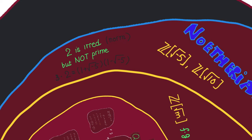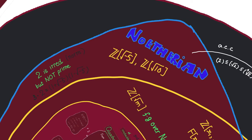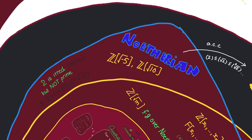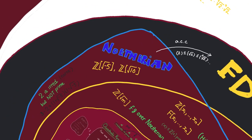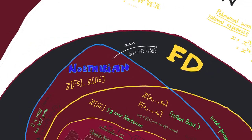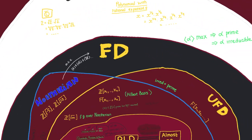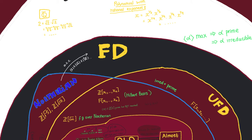Let's look at ℤ adjoined square root of -5. We have two different factorizations of 6 into irreducibles. We can check that these factors are irreducible by computing the norm. Thus, even when we have factorization into irreducibles, the factorization is not necessarily unique — not every factorization domain is a unique factorization domain.